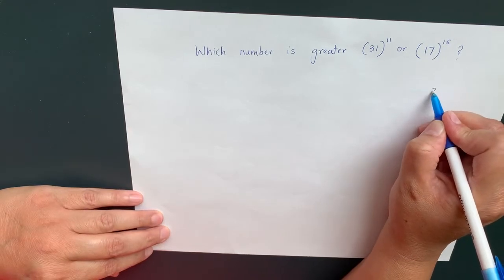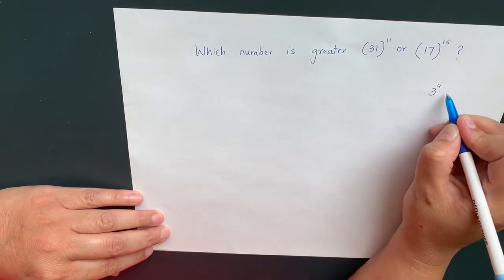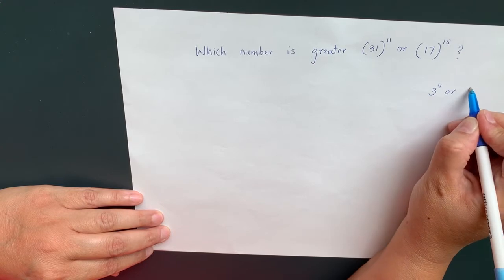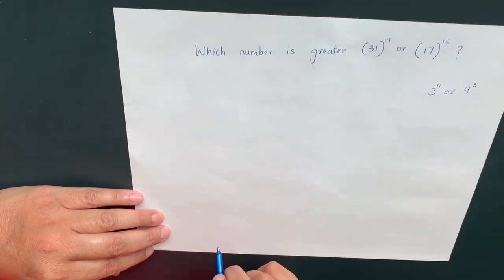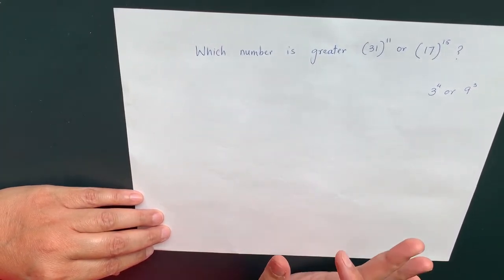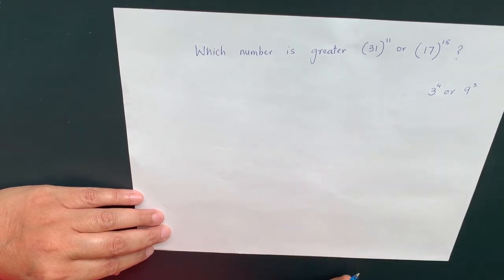Which number is greater: 3 to the power of 4 or 9 to the power of 3? I'm pretty sure you can quickly tell me that 9 to the power of 3 is greater. How?